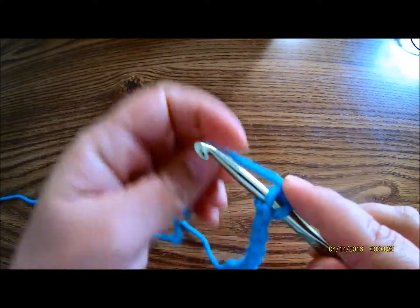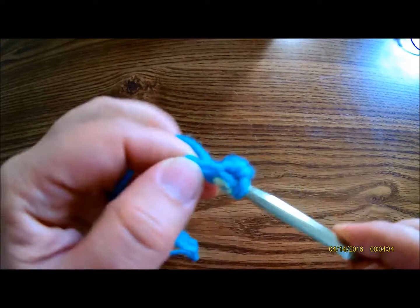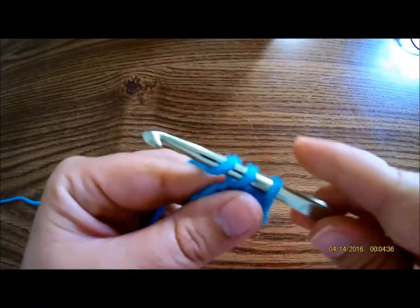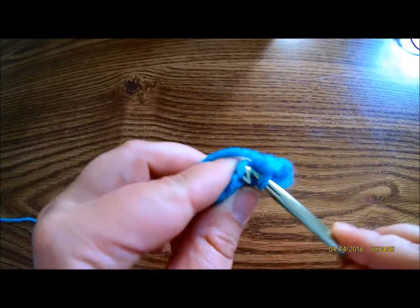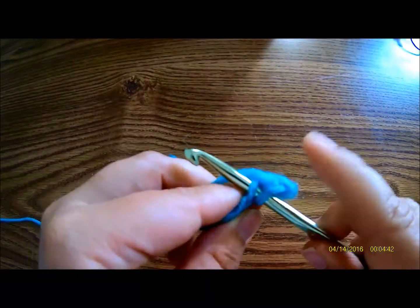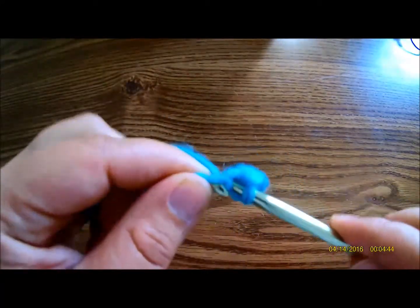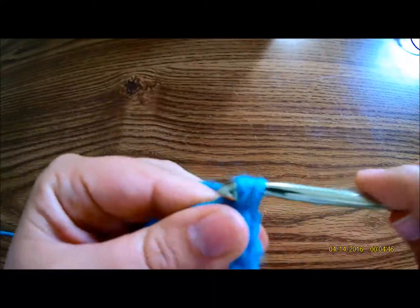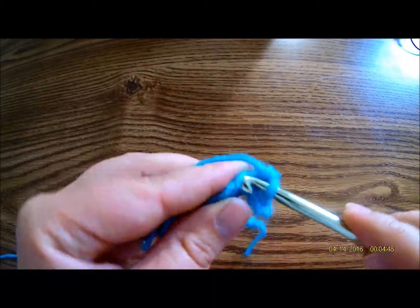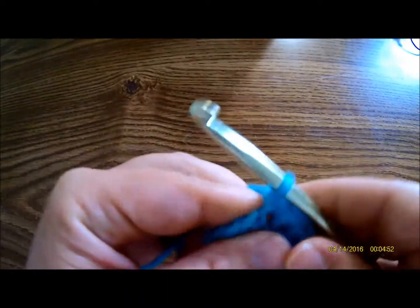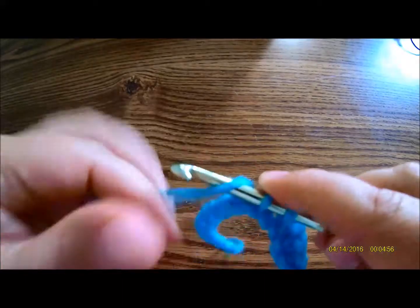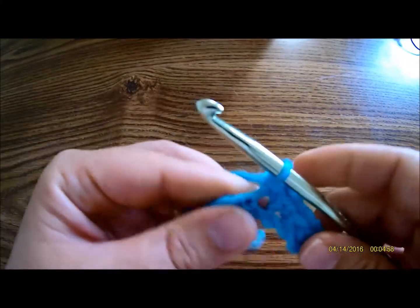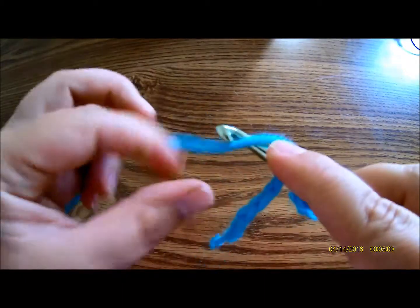Insert your hook, yarn over, pull up a loop, yarn over, pull through. Insert your hook, yarn over, pull up a loop, pull through. Now I'm just going to go ahead and stop saying it out loud, but go ahead and finish this strip so that you can see what the next row would look like.